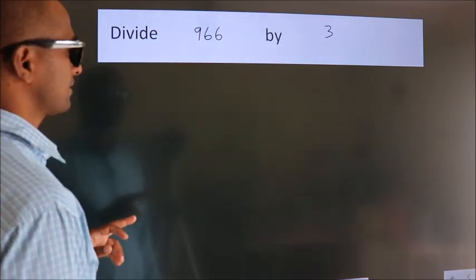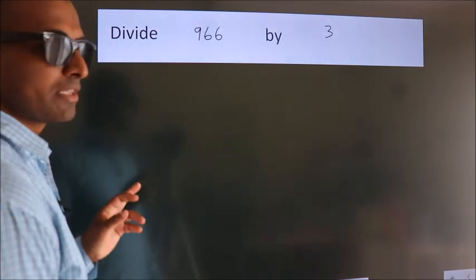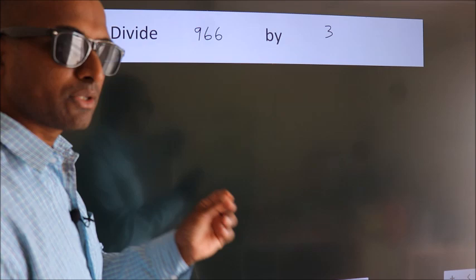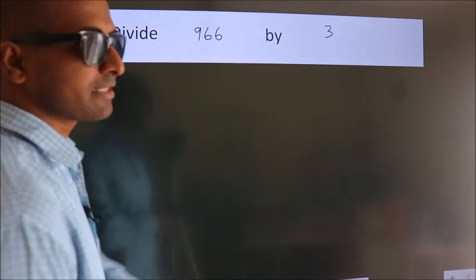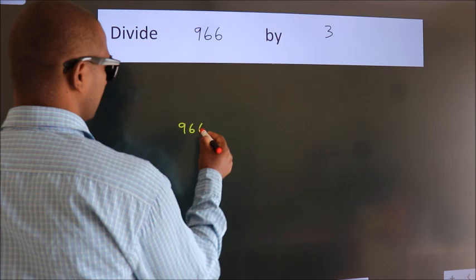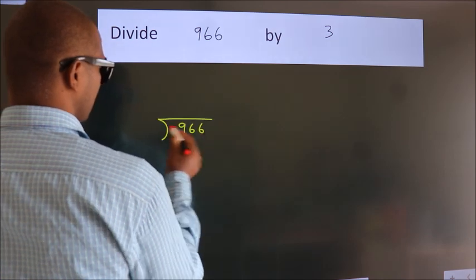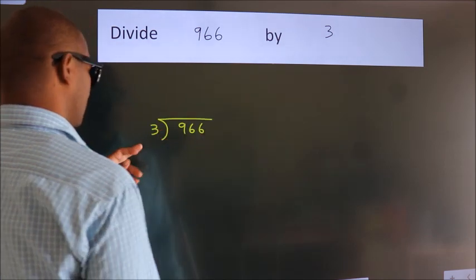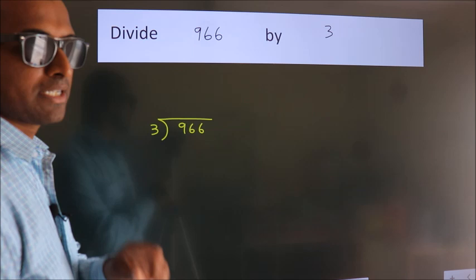Divide 966 by 3. To do this division, we should frame it in this way: 966 here, 3 here. This is your step 1.